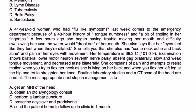Next one. A 41-year-old woman who has flu-like symptoms last week comes to the emergency department because of 48-hour history of tongue numbness and tingling in her fingertips. A few hours ago, she had trouble moving her mouth and difficulty swallowing because water would drool out of her mouth. She also states that her eyes feel like they were dilated. She has had some neck ache and backache, pain in her eyes with movement, temperature 101. Examination shows bilateral lower motor neuron seventh nerve palsy, absent gag bilaterally, slow and weak tongue movement, and decreased taste bilaterally. She complains of pain and attempts to resist motion when you try to flex her neck as she's lying on her back and when you flex her left leg at the hip and try to straighten her knee. Routine lab studies and CT scan are normal. Most appropriate next step is?